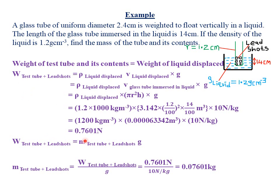The weight of the test tube plus the lead shots equals mg. The question asks for mass, and now that we have the weight, mass = weight ÷ gravity = 0.7601 ÷ 10 = 0.07601 kg, correct to four significant figures.